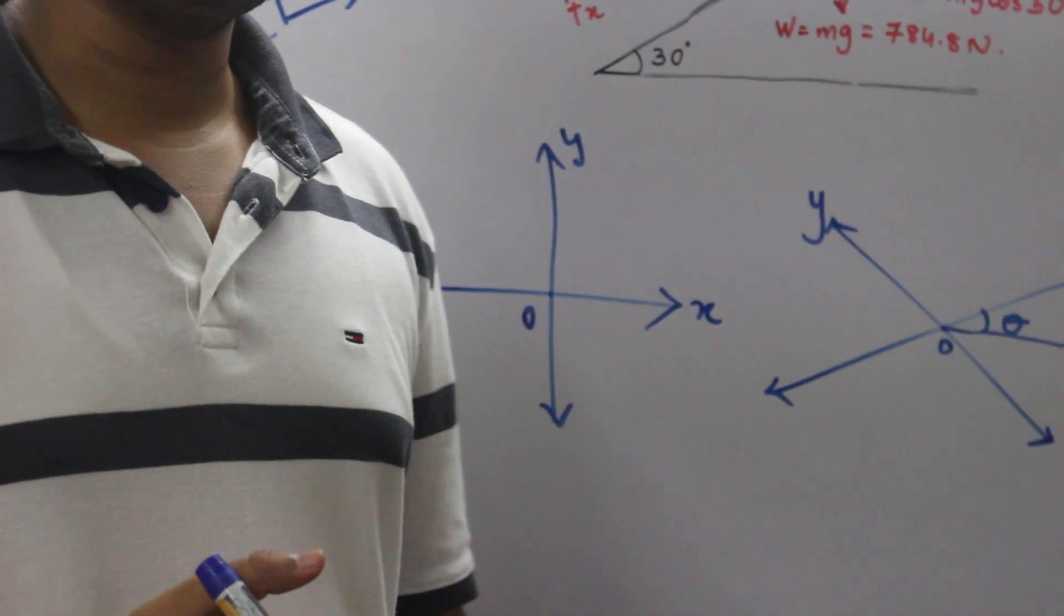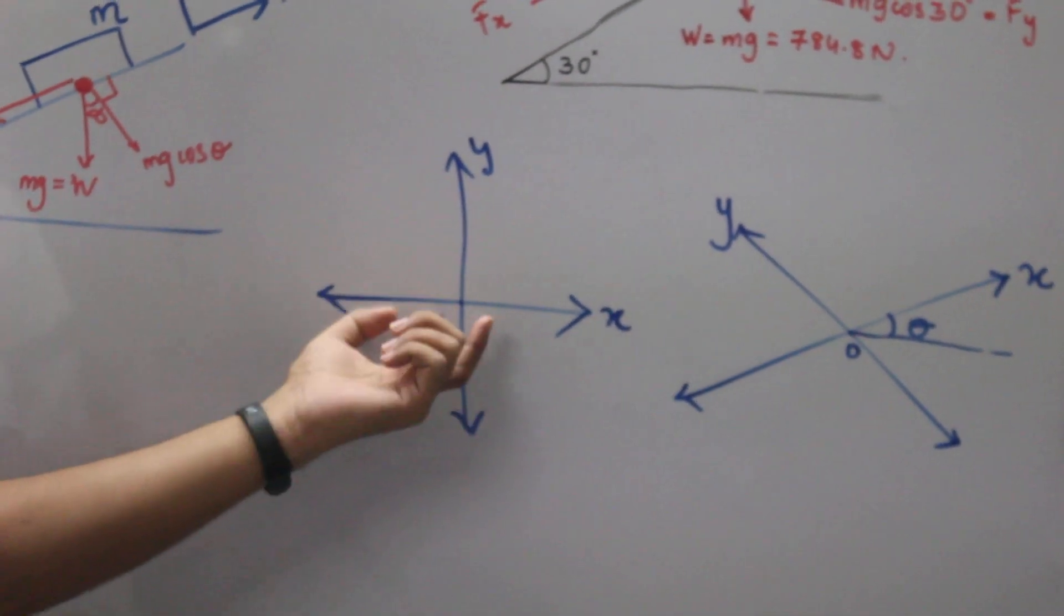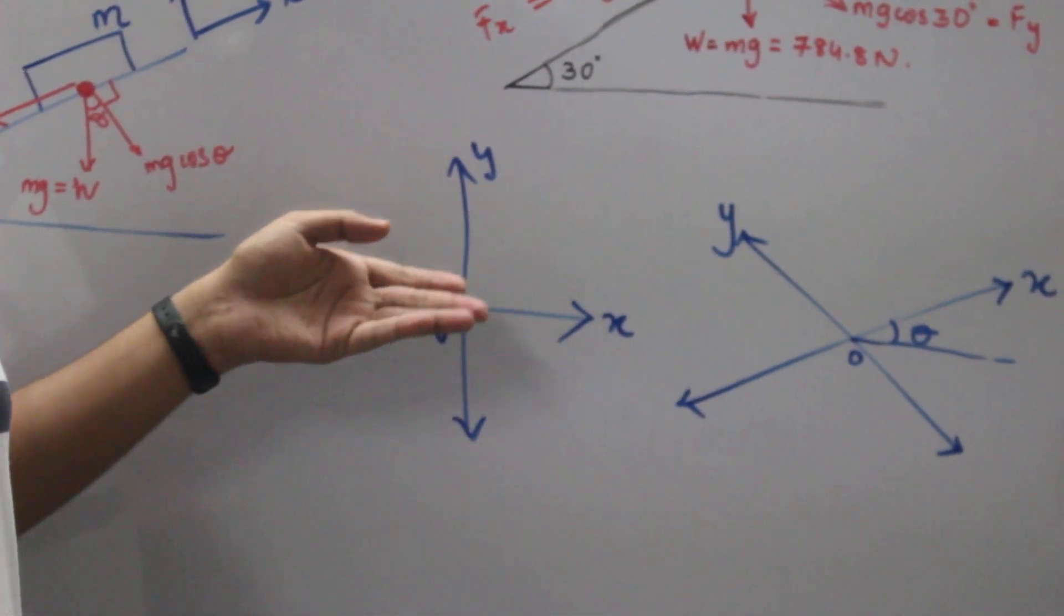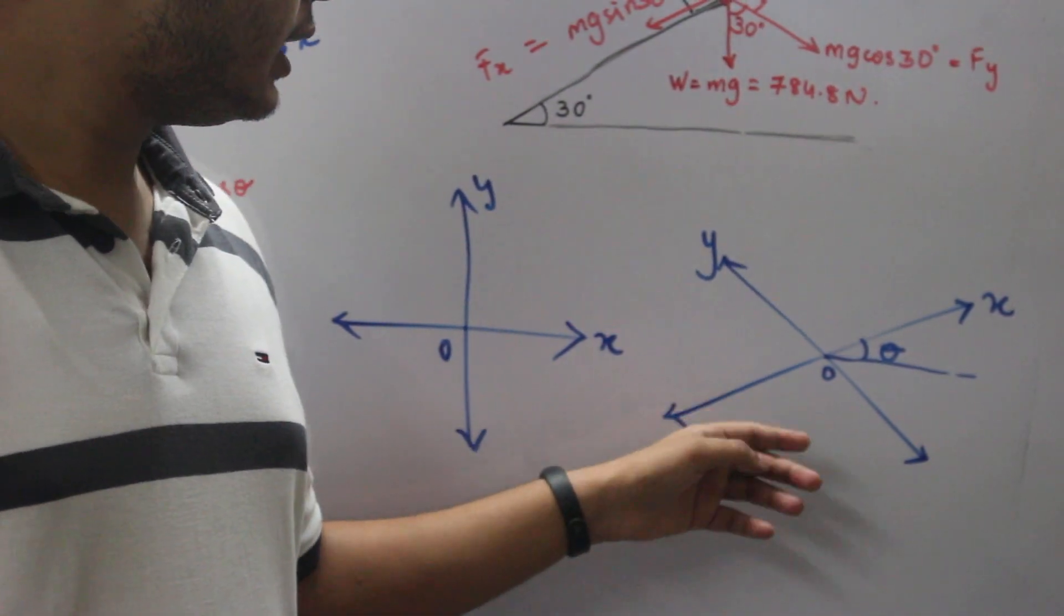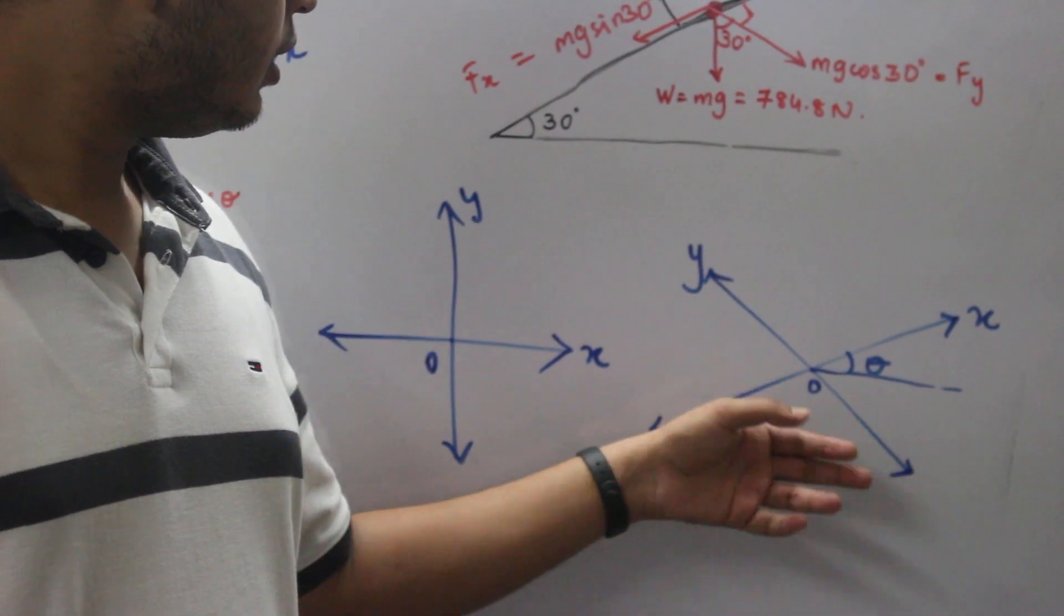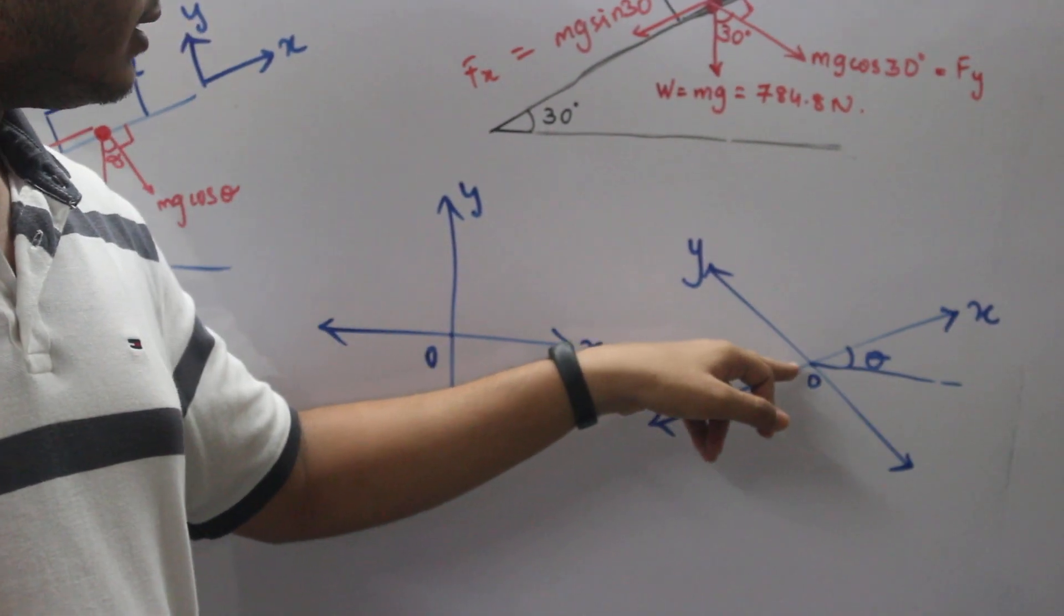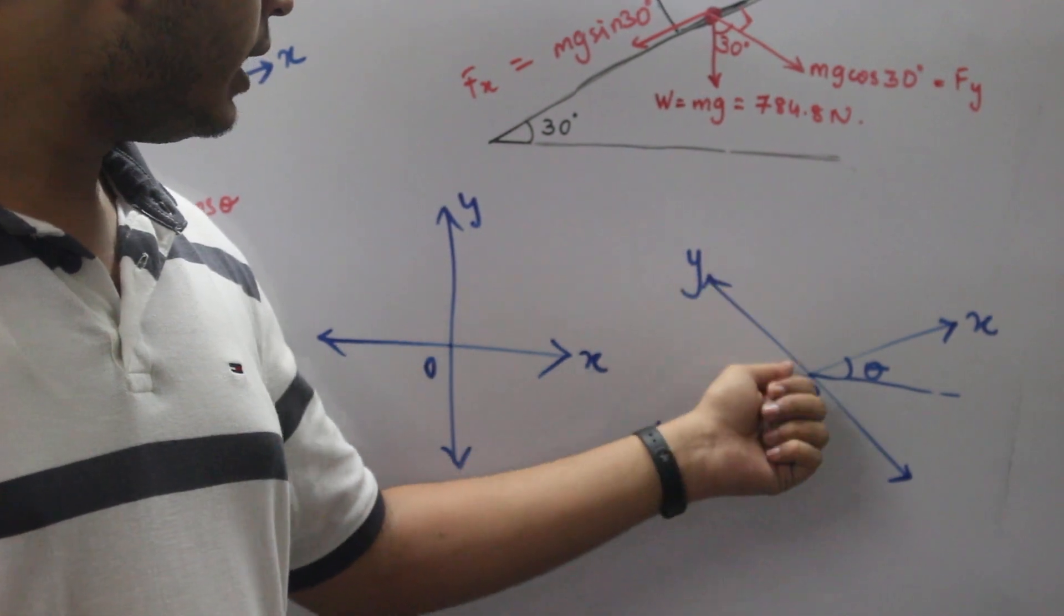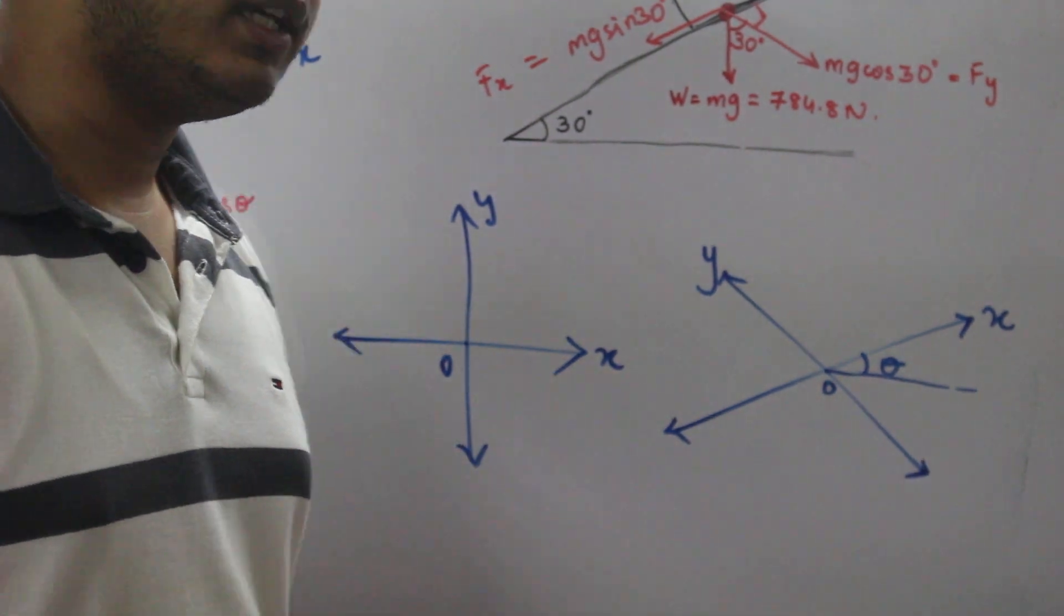Now what happens if you rotate this x and y orientation by some angle theta? Let's consider that you have rotated the orientation of the x-axis and y-axis by some angle theta. You will get a new orientation at an angle theta with respect to the horizontal. Your positive x-axis will be at angle theta with the horizontal and y-axis perpendicular to your x-axis. Now this case is of an inclined plane.